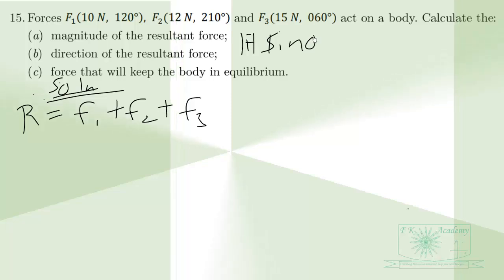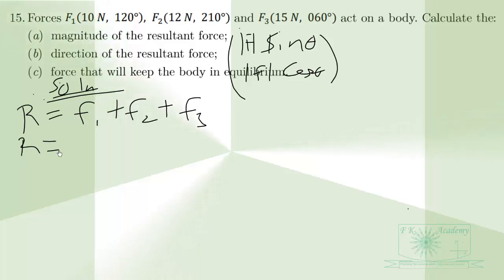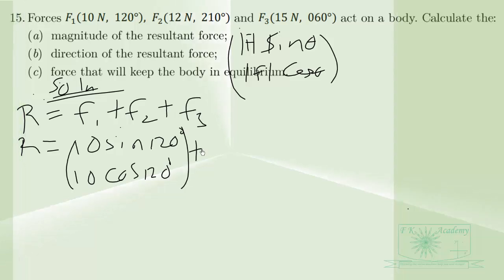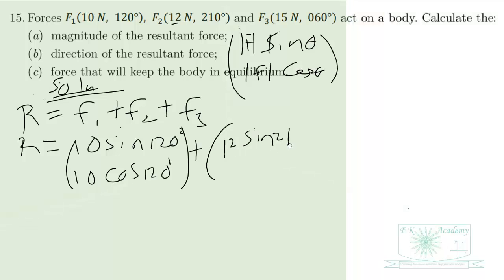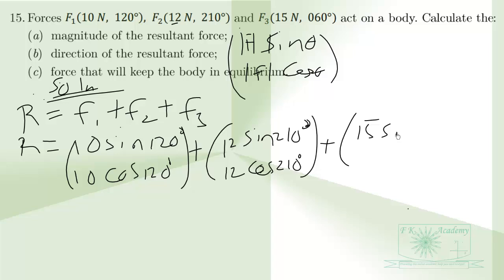We use magnitude times sin theta and magnitude times cos theta to resolve the forces. So R will be equal to: 10 sin 120°, 10 cos 120°, added to 12 sin 210°, 12 cos 210°, then added to 15 sin 60°, 15 cos 60°.